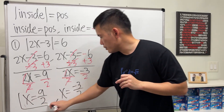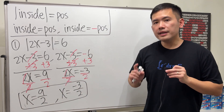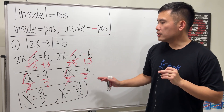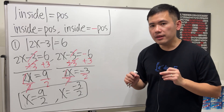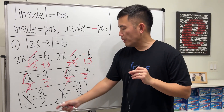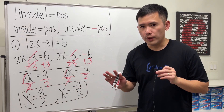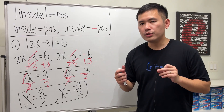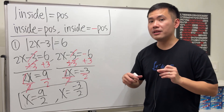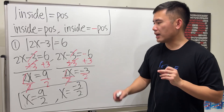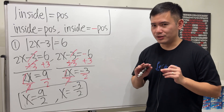Here we have two answers. One important thing to address: many people think that solving an absolute value equation always gives one positive and one negative answer. That is not always true. Sometimes both solutions can be positive, or both can be negative. Also, sometimes an absolute value equation can have no solution at all.